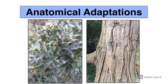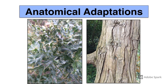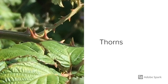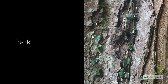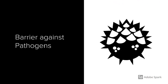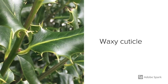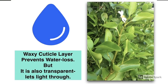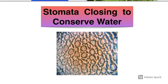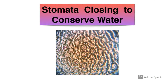Plants also exhibit anatomical adaptations. Many have thorns to prevent them being eaten. Trees have thick bark, which acts as a physical barrier against the entry of pathogens. Leaves have a waxy cuticle layer, which is very important to prevent the plant losing too much water. The stomata are also able to close to conserve water, which is another adaptation.